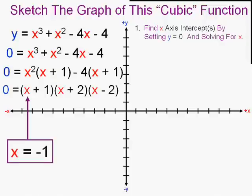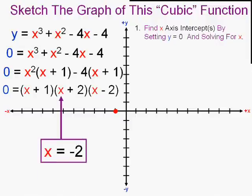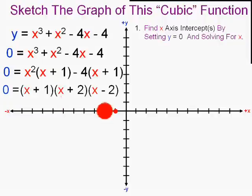Now x squared minus four is a difference of two squares. So I'll factor that into x plus two, x minus two which means using the zero property the roots of this equation are negative one for this factor. So there's one x intercept. Negative two for this factor. And the third one, x has to be a positive two to make it zero. So those are your three x intercepts. That's the first step.